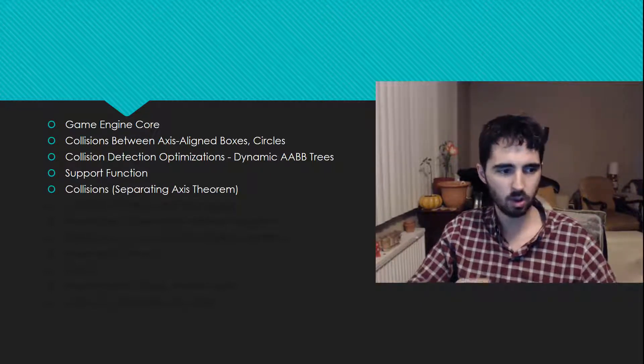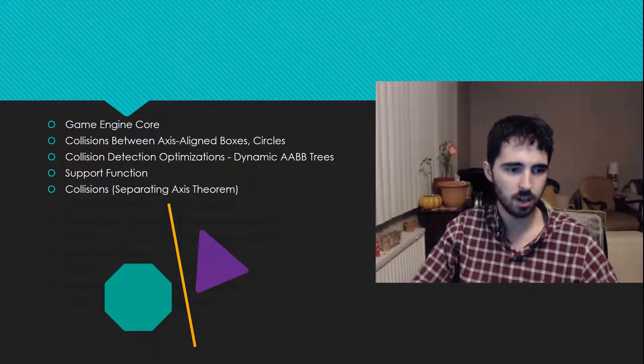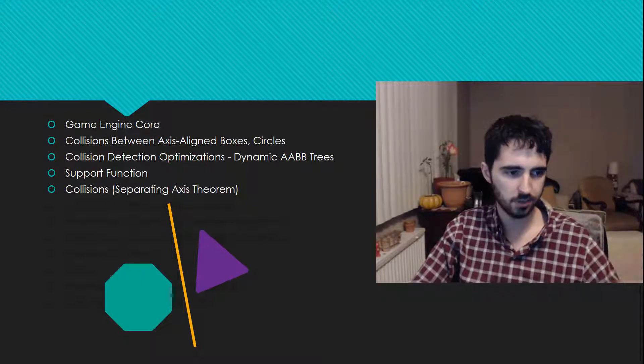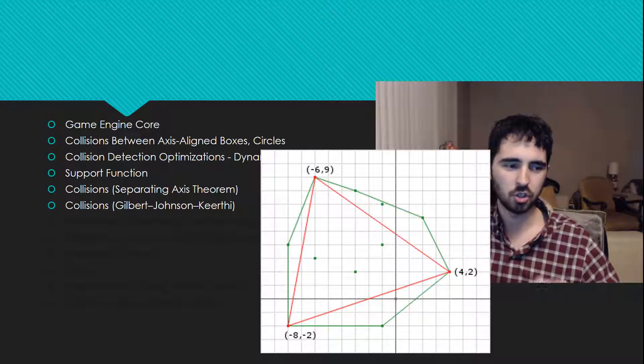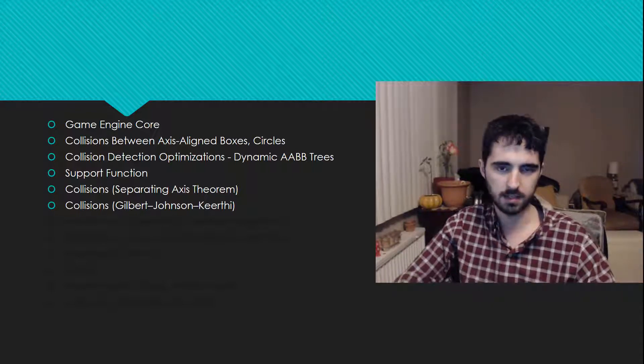I'm going to be talking about the support function because it's very important for understanding how we're going to accomplish many of the algorithms presented in this series. After that, we can start talking about the separating axis theorem, which is a way of doing collision detection. Very simple algorithm to implement and understand. Then we'll be talking about the GJK algorithm, which also does collision detection, but is extremely difficult to understand. It also has some advantages over the SAT.